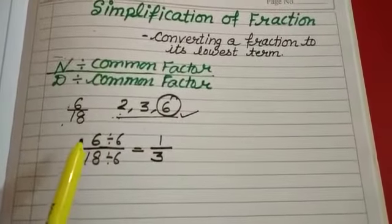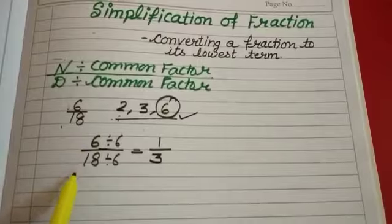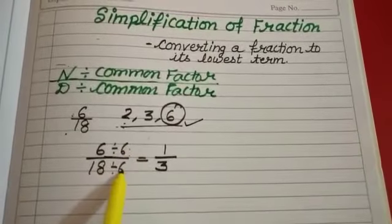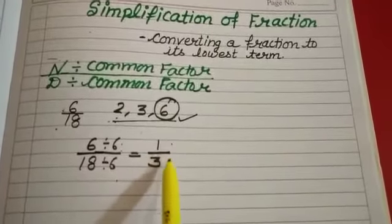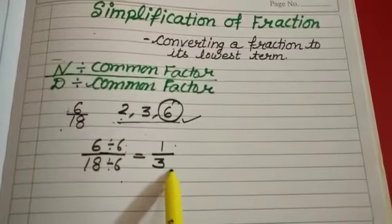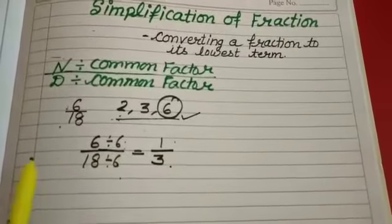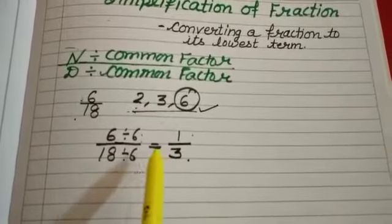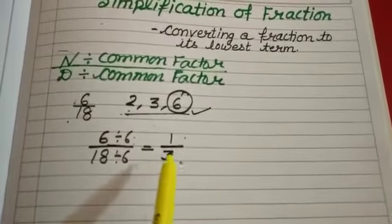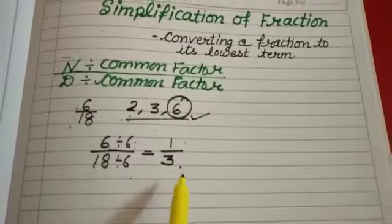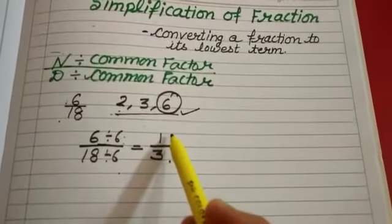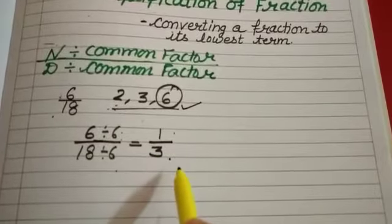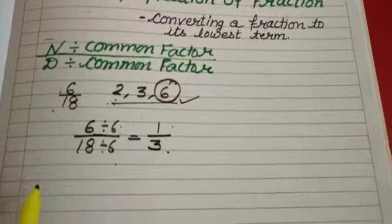If we divide the fraction 6 by 18 by 6 — the common factor — we get 1 and 3. This is the lowest term of the fraction 6 by 18. We can say there is no other number other than 1 that can divide 1 by 3. So this is the lowest term of the fraction 6 by 18.